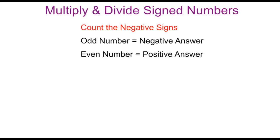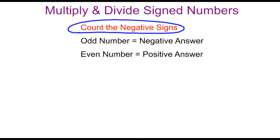Now, if we want to multiply or divide signed numbers, it's even easier. All we need to think about is to count the negative signs. When we count the negative signs in the problem, if we come up with an odd number of negative signs, then our answer is going to be negative. If we come up with an even number of negative signs, then our answer will be positive.